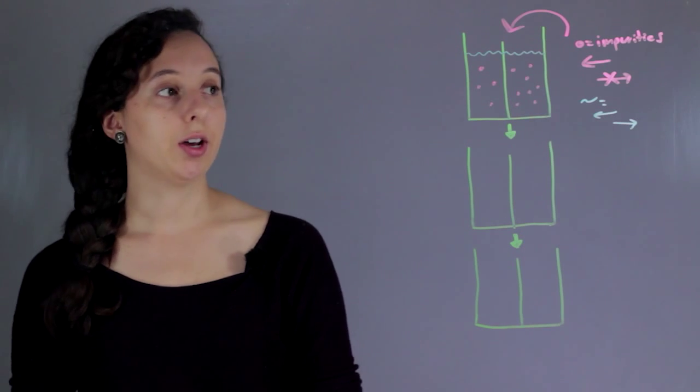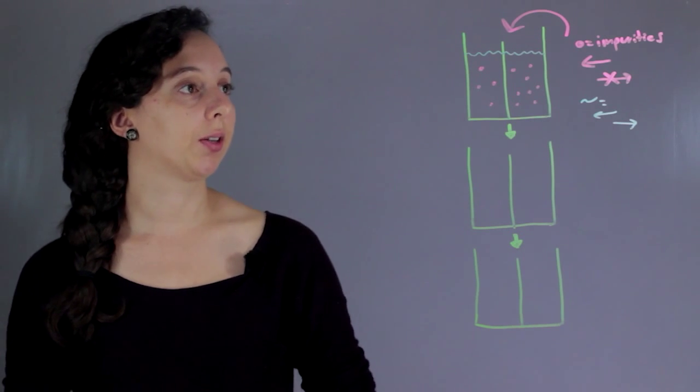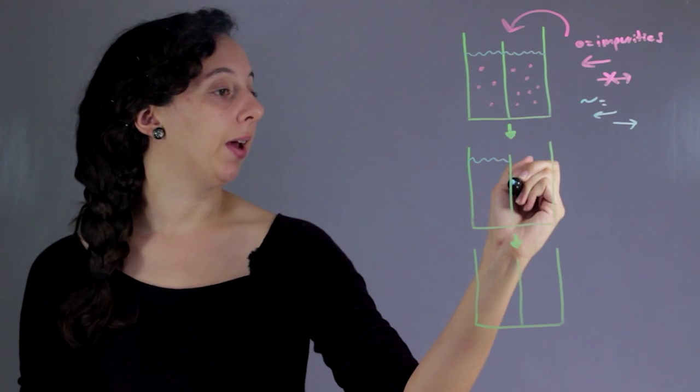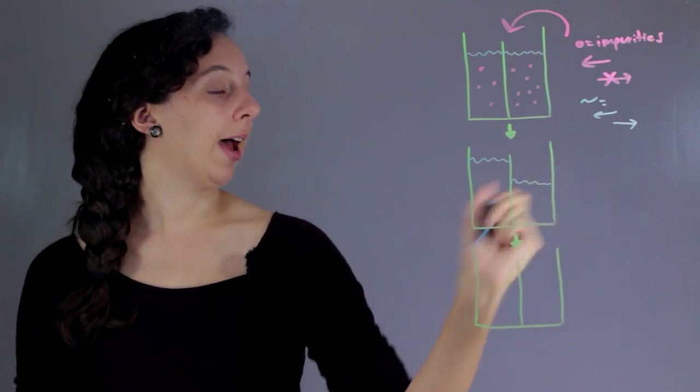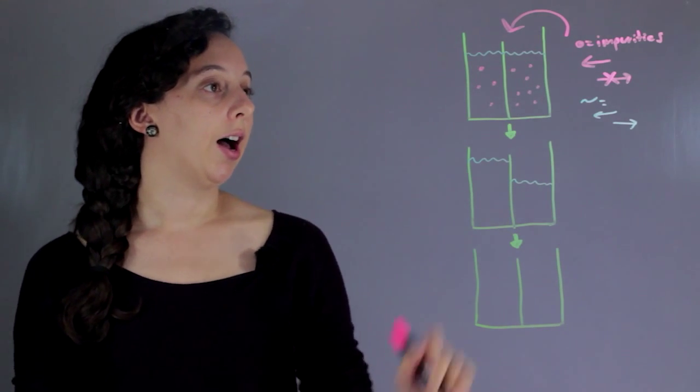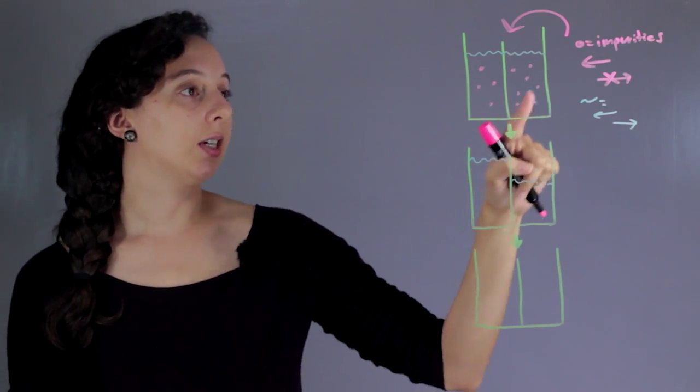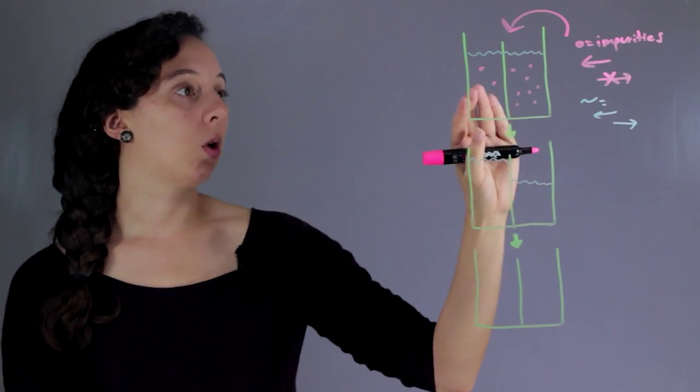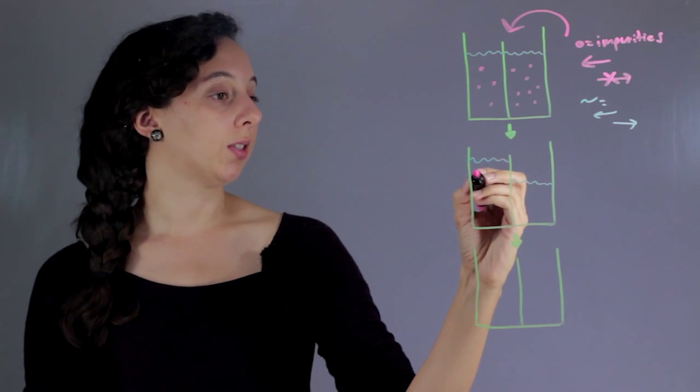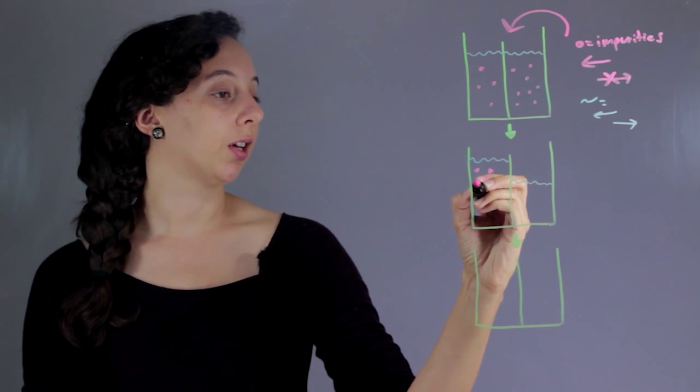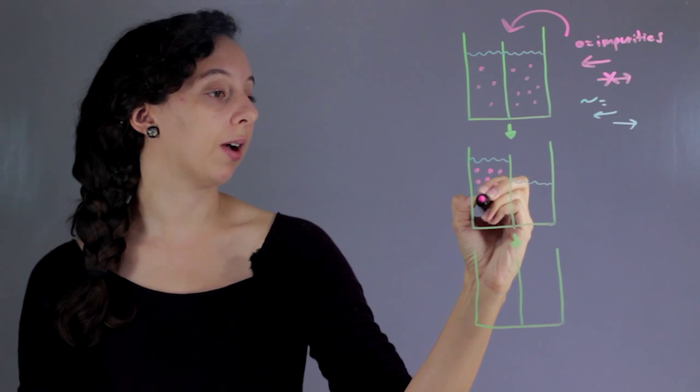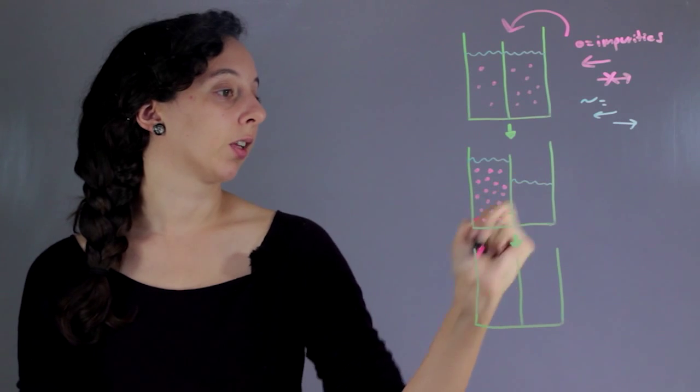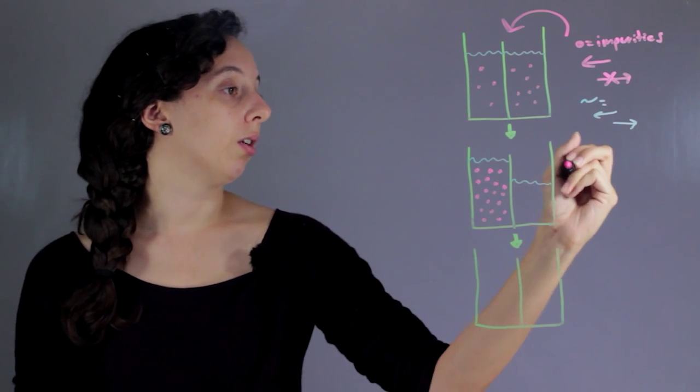So now if you wait just a regular amount of time you can let osmosis happen and what will happen is that naturally these pink dots, these impurities, will travel around and if they run into this wall they'll go through it but then once they're there they'll get stuck and so they'll all travel to the left side. And so this is osmosis.